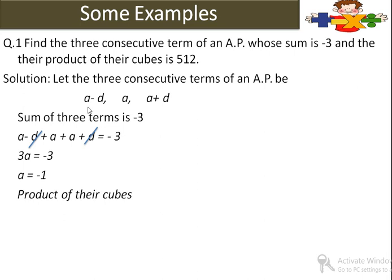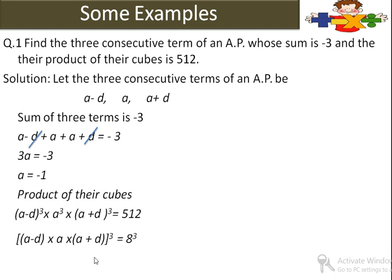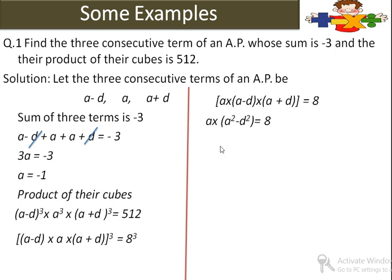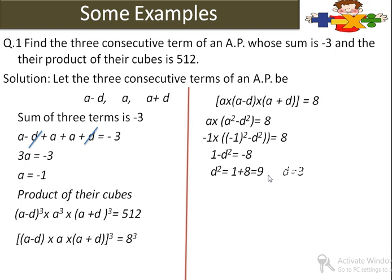Product of their cubes is 512. तो (a minus d) cube into a cube into (a plus d) cube equals 512. यह 8 का cube है. Bracket लगाकर cube बाहर लें: [(a minus d) into a into (a plus d)] whole cube equals 8 cube. Cube cancel होंगे: (a minus d)(a plus d) into a equals 8. Using a square minus d square: (a square minus d square) into a equals 8. a की value minus 1 put करें: (1 minus d square) into minus 1 equals 8, so minus 1 plus d square equals 8... wait — (minus 1) into (1 minus d square) equals 8, giving d square minus 1 equals 8, so d square equals 9, and d equals 3.